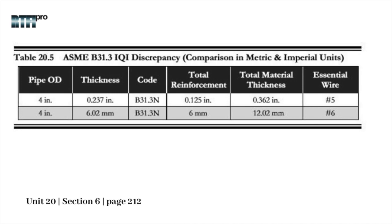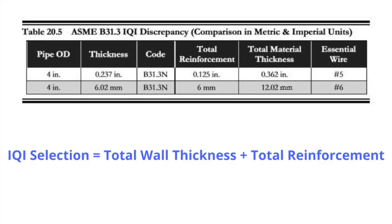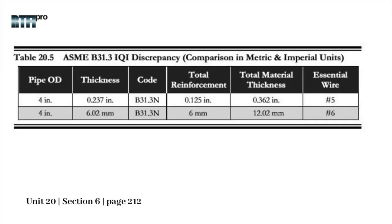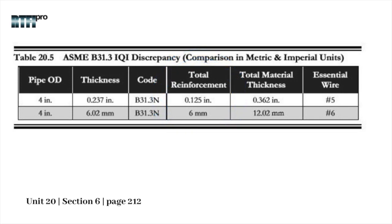For 4-inch outside diameter pipe, for imperial the wall thickness is 0.237 inch, and when we use metric it's 6.02 millimeters. IQI is based on the total wall thickness plus the total reinforcement. The reinforcement for imperial is 0.125 inch and 6 millimeters when using metric. So the total thickness for imperial is 0.362 inch and for metric is 12.02 millimeters.